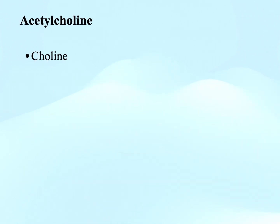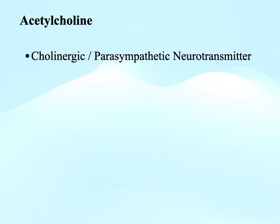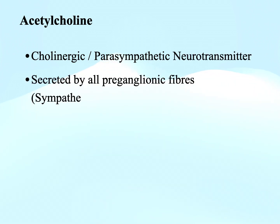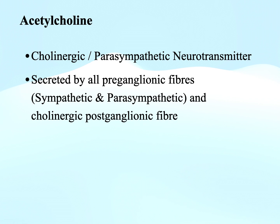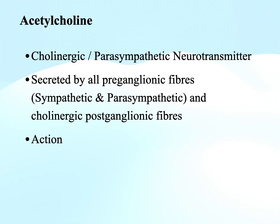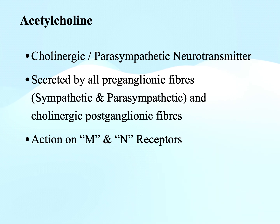Acetylcholine is a cholinergic neurotransmitter, or parasympathetic neurotransmitter, secreted by all the preganglionic fibers — whether sympathetic or parasympathetic — as well as cholinergic postganglionic fibers. Its action is on two types of receptors: muscarinic (M) or nicotinic (N).